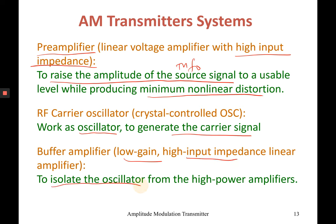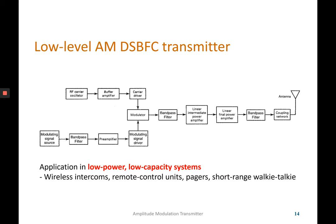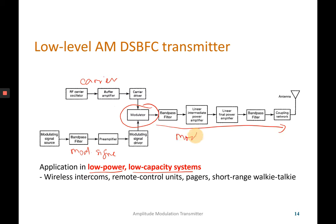Next is the block diagram showing both the low level and high level AM transmitters. The low level transmitter is used in low power, low capacity systems. It uses a modulator to modulate the carrier signal and the modulating signal, and then the modulated wave is processed before reaching the antenna.